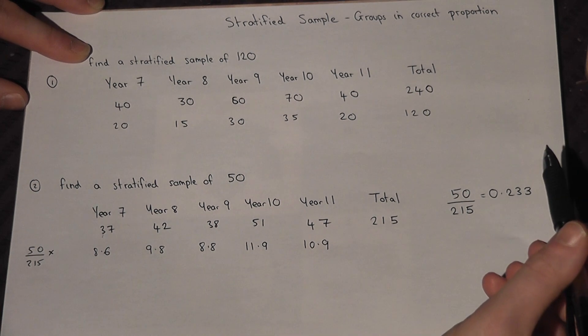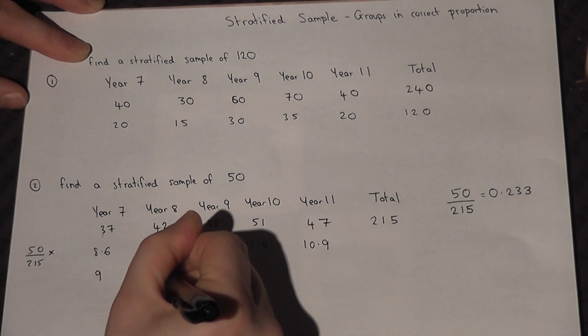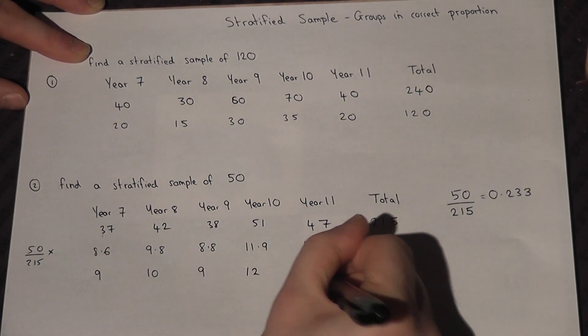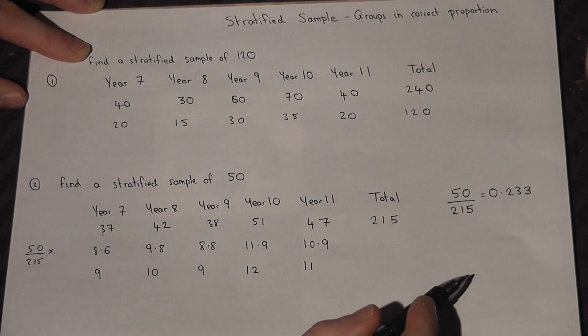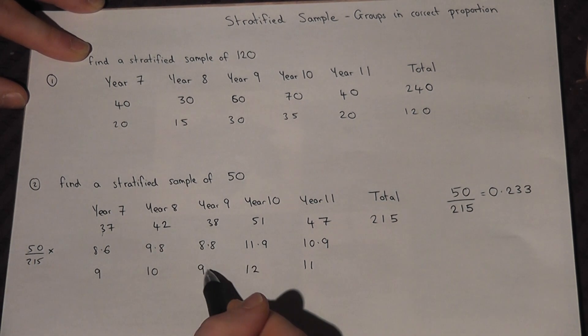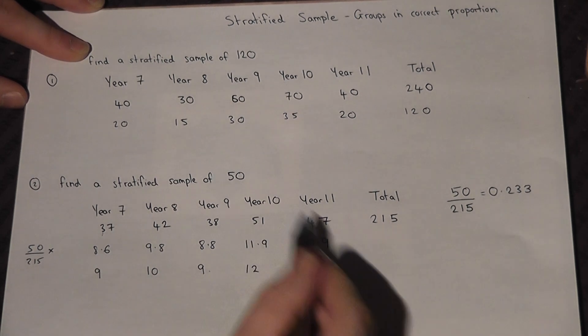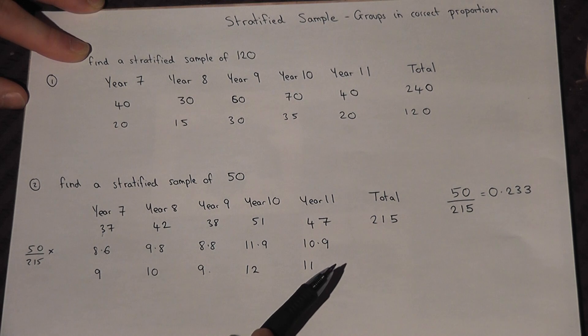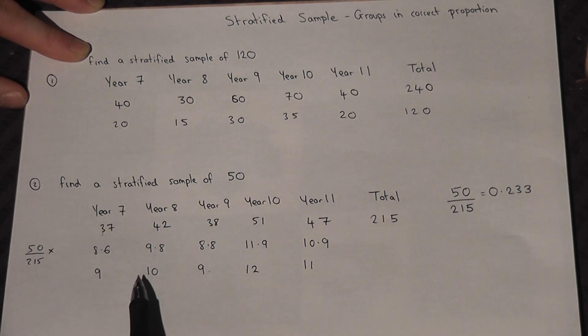If I now round them I get 9, 10, 9, 12, and 11. So this is saying ask 9 year 7 pupils, 10 year 8, 9 year 9, 12 year 10, and 11 year 11. However, just a check because the question said a sample of 50. So let's check we've got the right sample size.